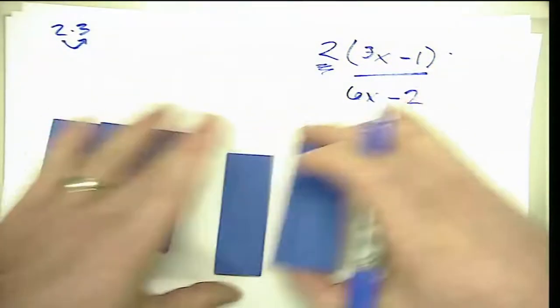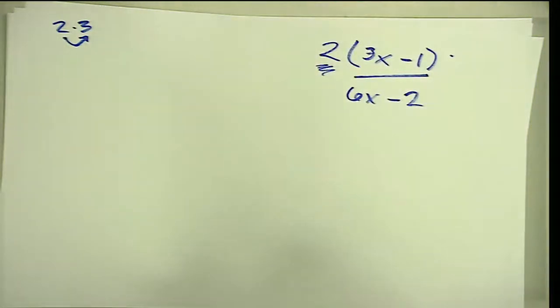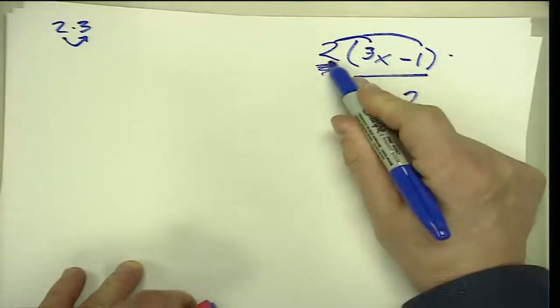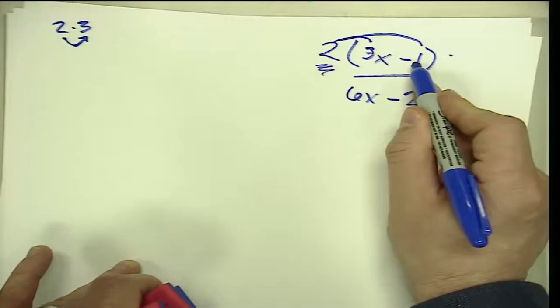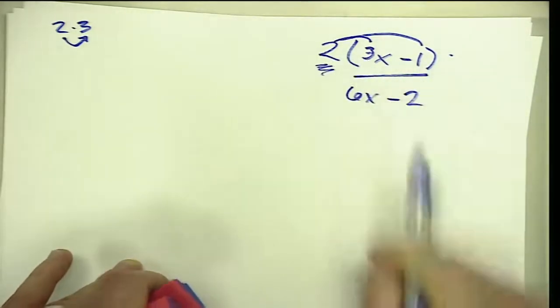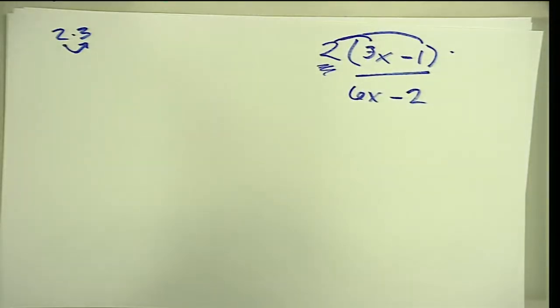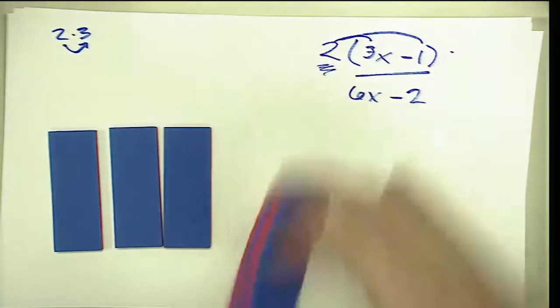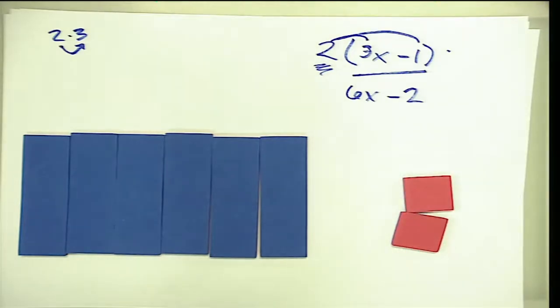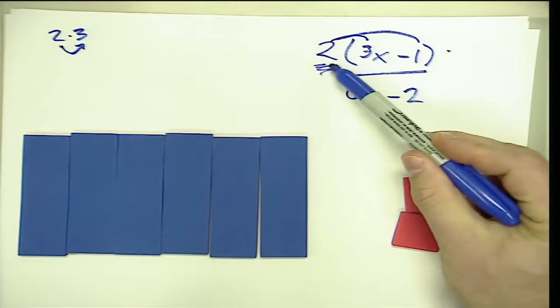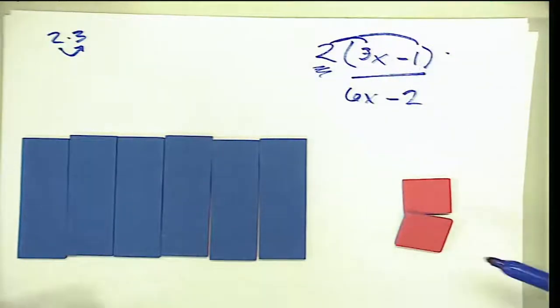We can also interpret the distributive property differently: instead of 2 groups of 3x minus 1 as a whole, we think of it as 2 groups of 3x and 2 groups of negative 1. Two groups of 3x gives 6x, and 2 groups of negative 1 gives negative 2. This is more how we generally think about distribution in algebra. So there are two ways to model: 2 groups of the quantity 3x minus 1 together, or distributing term by term.